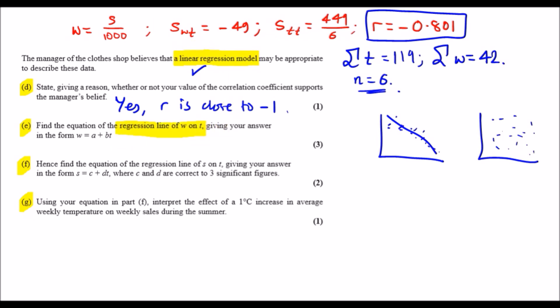Giving your answers in the form of W equals A plus BT. So first things first, let's figure out the value of B. W on T means we find the sum of squares of W and T, all over the total T. That's how it usually works. Now you just plug in the values. So SWT is minus 49, STT is 449 over 6.